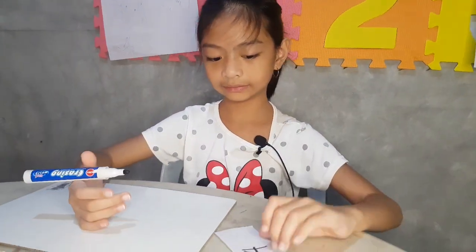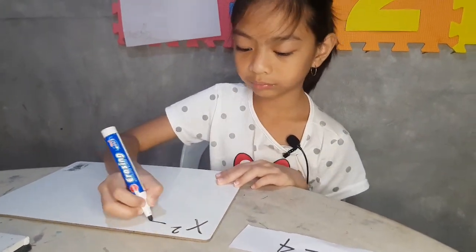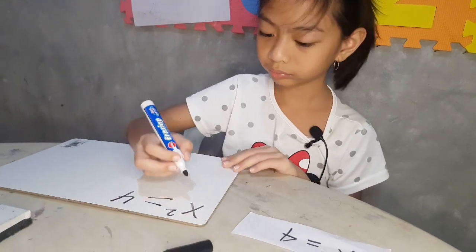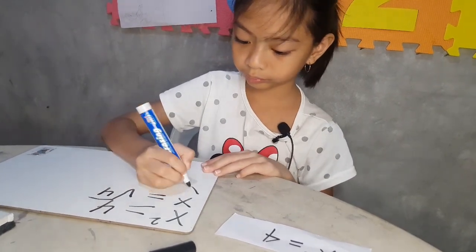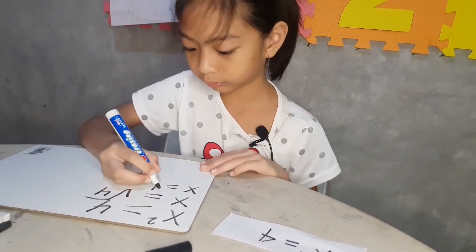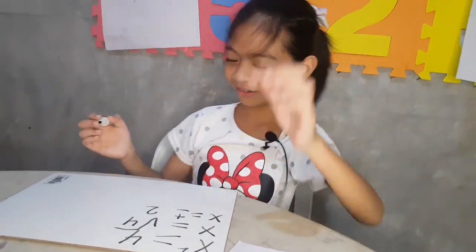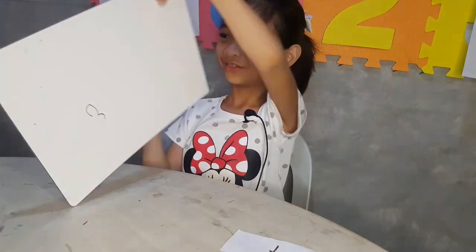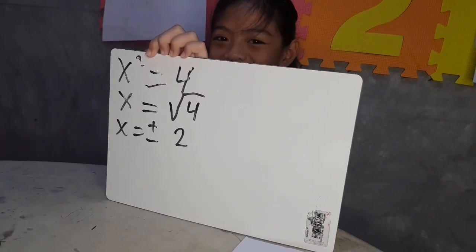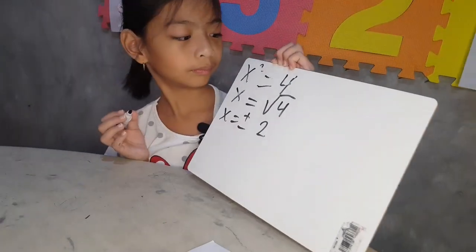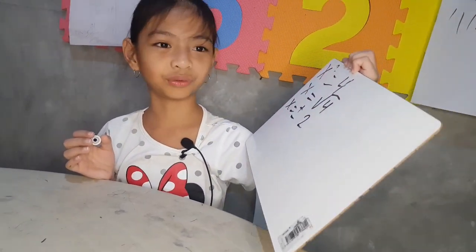X squared equals 4. Okay — I'm so scared! 4, and X is equal to 2. Can you read? Positive and negative 2. Okay, good job.